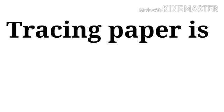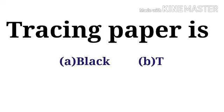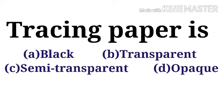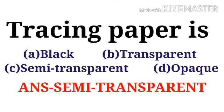Tracing paper is — the options are: black, transparent, semi-transparent, opaque. The correct option is option C, semi-transparent.